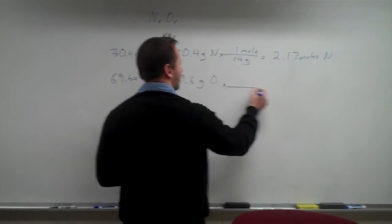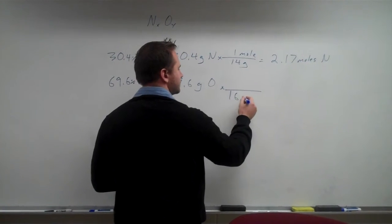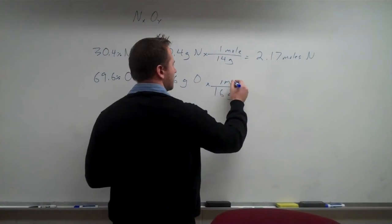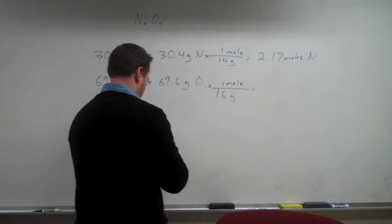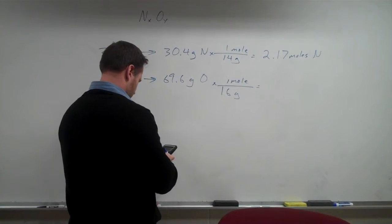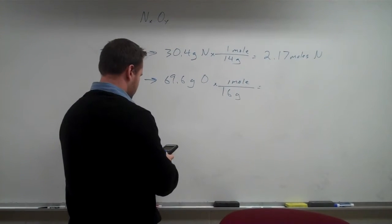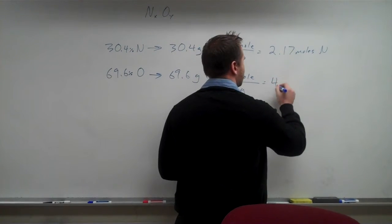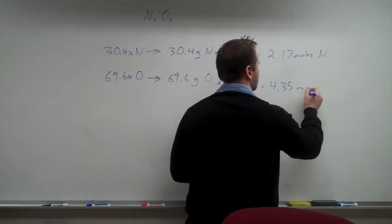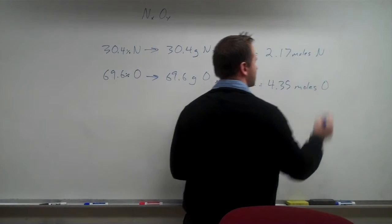And then we find the number of moles of oxygen here. Oxygen is 16 grams per mole, and that works out to be 4.35 moles of oxygen.